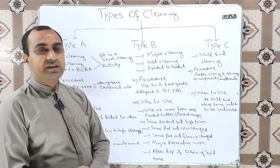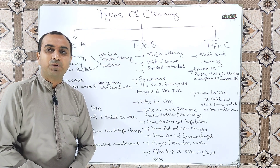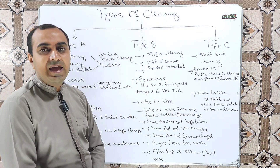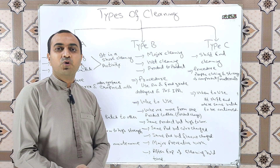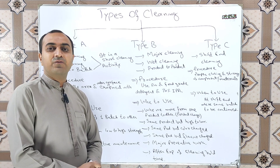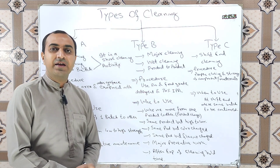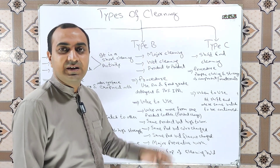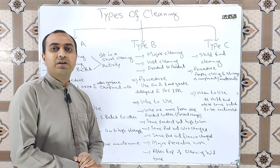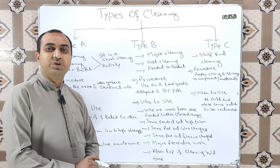We perform Type B cleaning when we shift from one product to another product — for example, after completing manufacturing of product A and wanting to manufacture product B. We also perform Type B cleaning when shifting from higher strength to lower strength of the same product, such as after manufacturing 20 mg and then wanting to manufacture 10 mg.